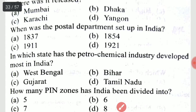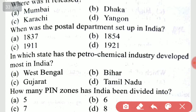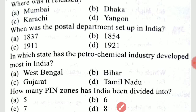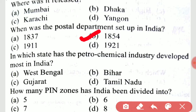When was the postal department set up in India? A very important question. It is the year 1854. The postal department was set up in India in 1854.